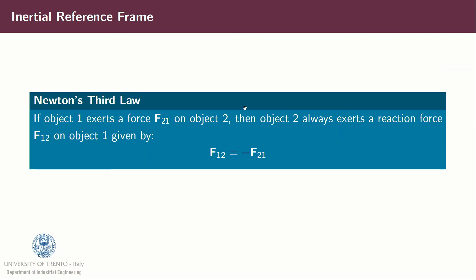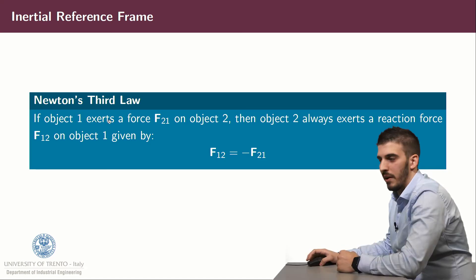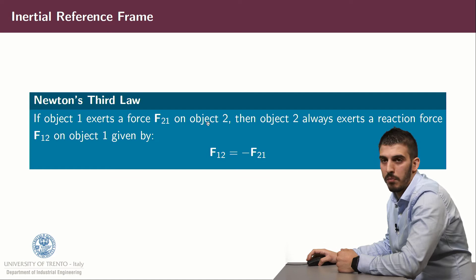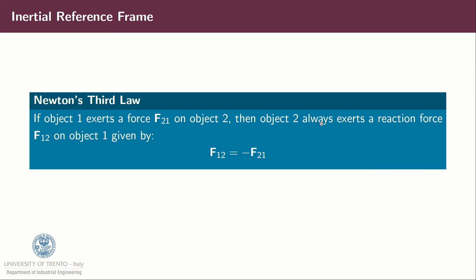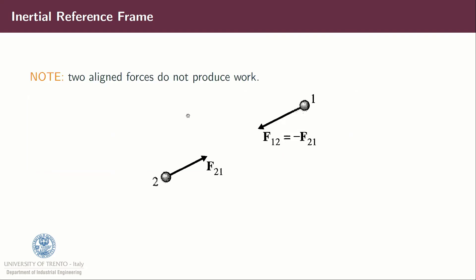We can now state Newton's third law, which states that if object one exerts a force F21 on object two, then object two always exerts a reaction force F12 on object one, given by F12 is equal to minus F21. It's important to note that those two forces are aligned and therefore do not produce work.